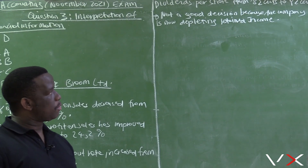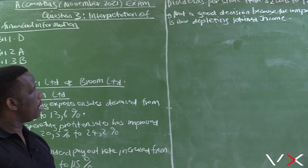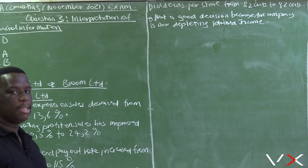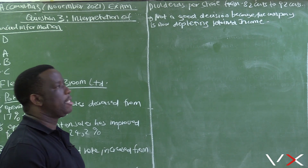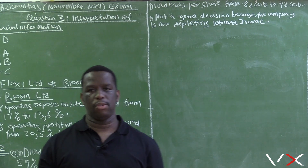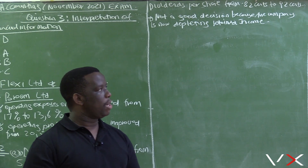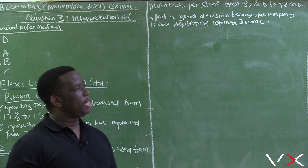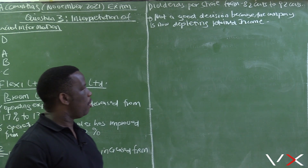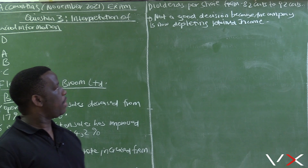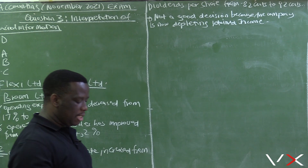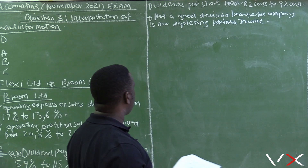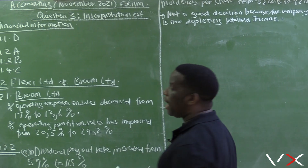The 12 cents is obtained from the retained income, so this is not a good decision because the company is depleting its retained income. Some students may argue that this decision is based on the policy of wanting to please shareholders and attract more investors, which would also be marked correct. However, looking at this decision, it was definitely not correct because the company needs to retain funds for future development.